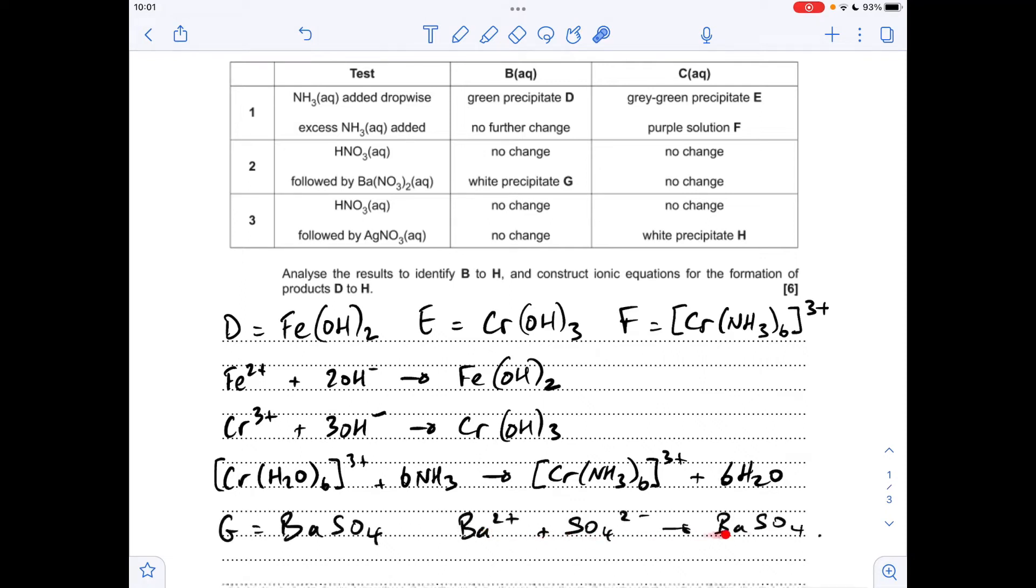There's the equation for the formation of G, the barium sulfate. So we can now identify B fully—we know it's iron(II) and we now know it's sulfate, so it's iron(II) sulfate.